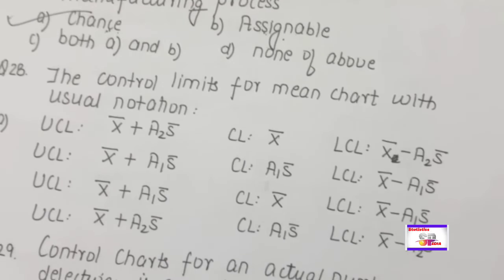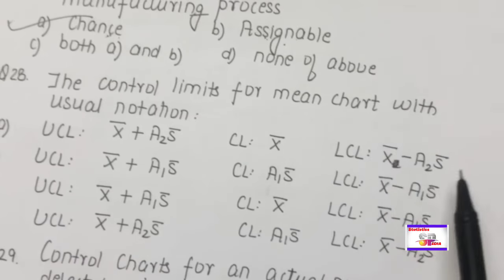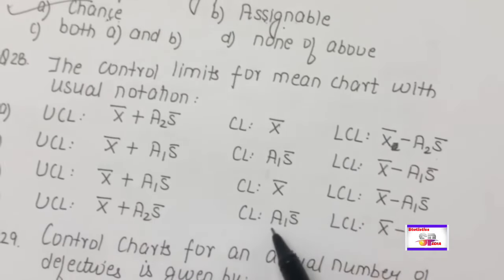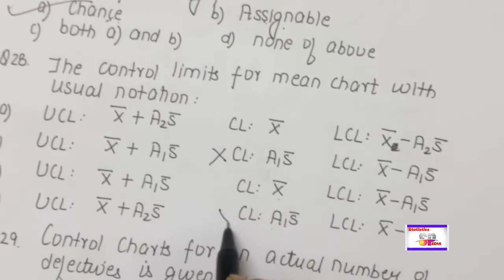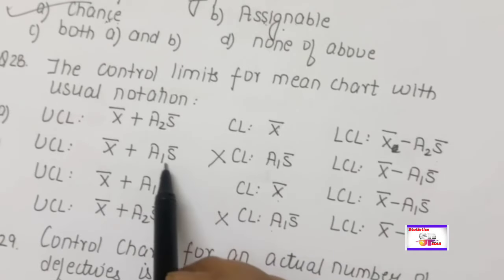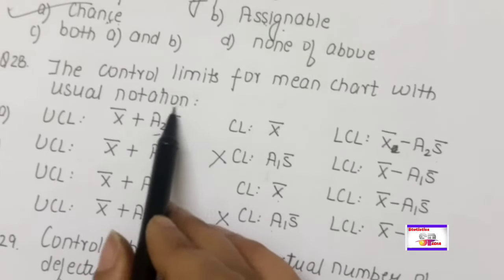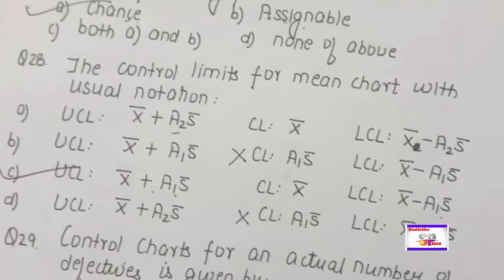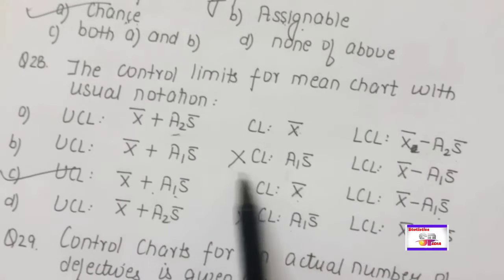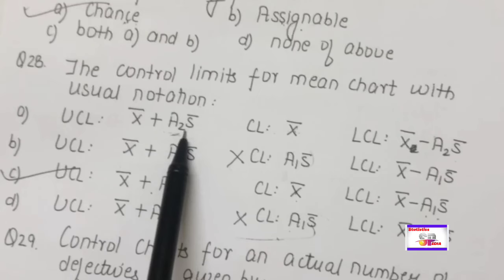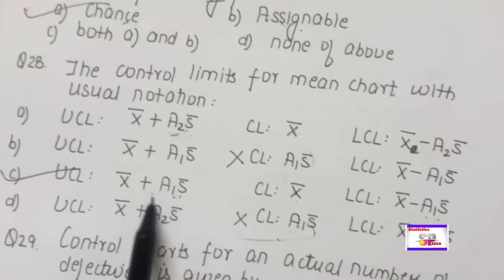The control limits for the mean (X̄) chart with usual notation: the central line is X̄. Two options with a different central line are discarded. For the mean chart, the constant A₂ is always paired with R̄ (range chart), while constant A₁ is used with s̄ (sigma chart). So the correct control limits for the mean chart use A₂ and R̄: UCL = X̄ + A₂R̄, LCL = X̄ − A₂R̄.